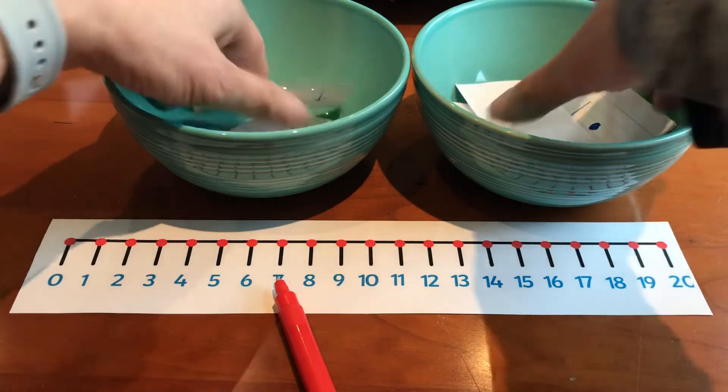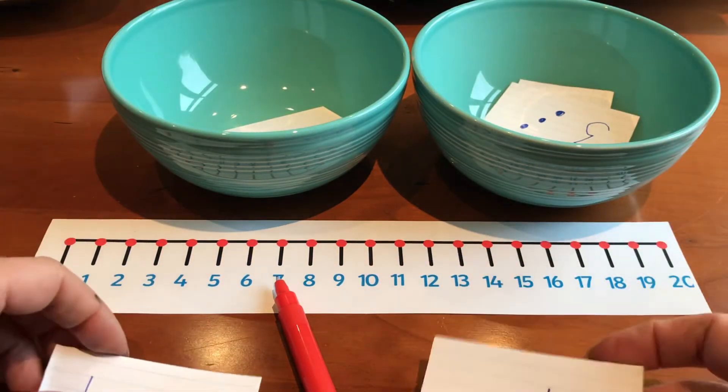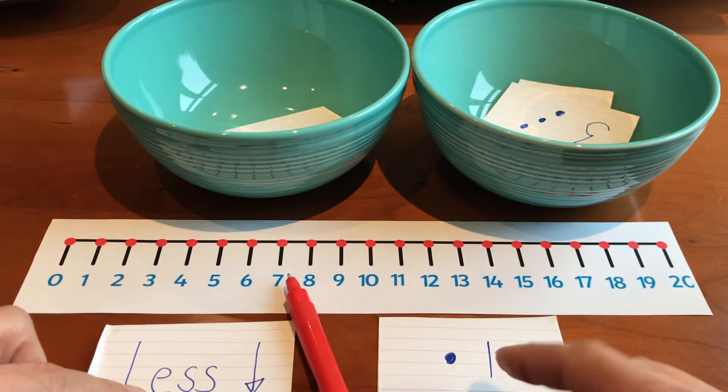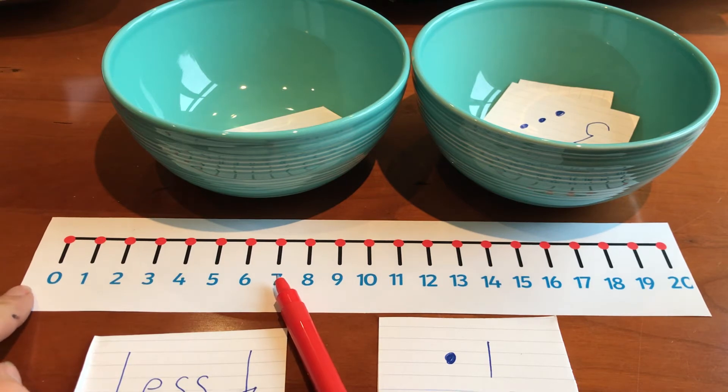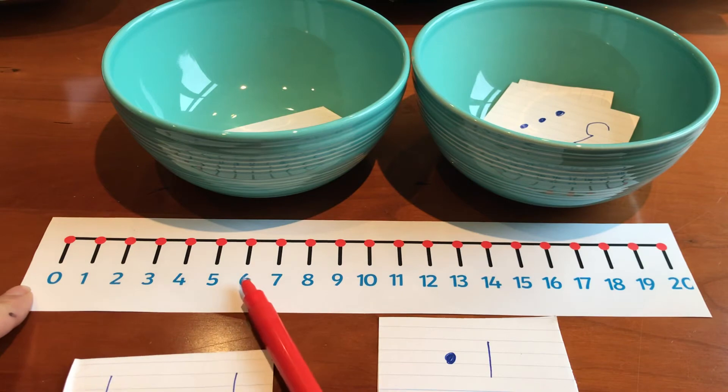I'm going to put these back and mix them up. Oh no, look, I've got less again. Less 1. So I was on 7, so I'm going to count down 1 from 7. So I'm on 7, I'm going to count down 1: 6.